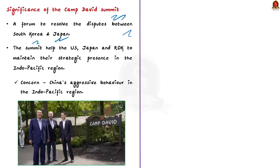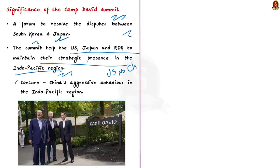Secondly, the Camp David summit will help the three countries to maintain their strategic presence in the Indo-Pacific region. As we all know, China is continuously working to obtain a stronghold over the Indo-Pacific region, creating an indirect dispute with the United States. The US has been traditionally dominating the Pacific region, but China's increasing presence has angered the United States. So the Camp David summit helped the US, Japan and South Korea send a strong message against China's aggressiveness in the region.